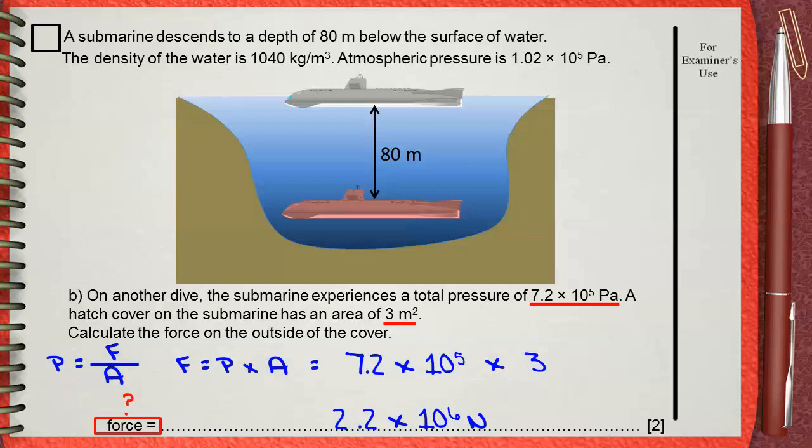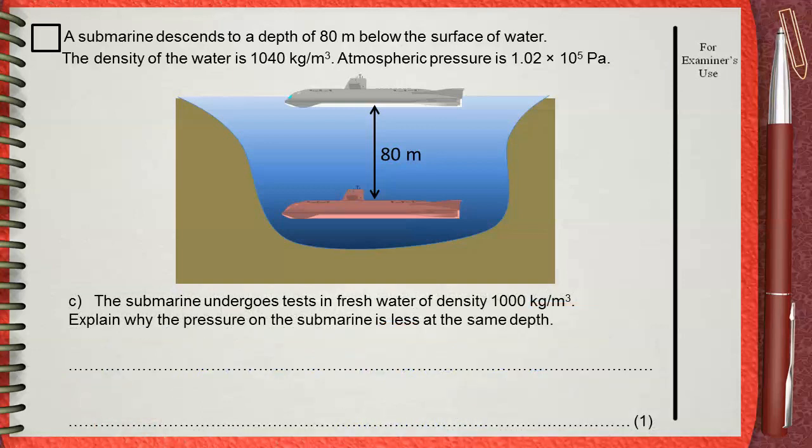Question C. The submarine undergoes tests in freshwater of density 1000 kilograms per meter cubed. Explain why the pressure on the submarine is less at the same depth.